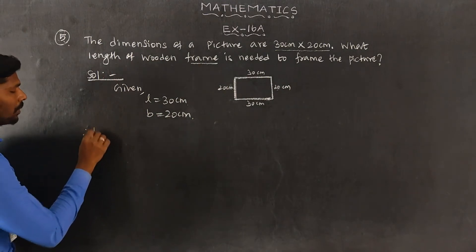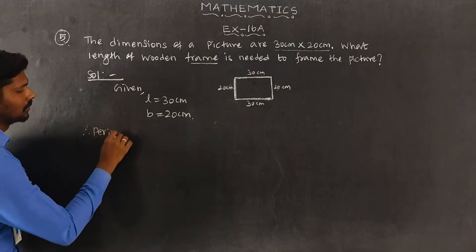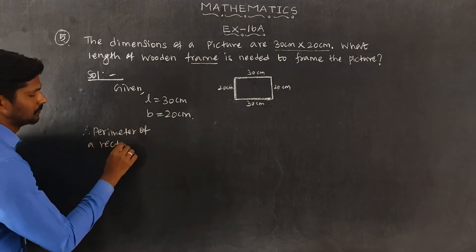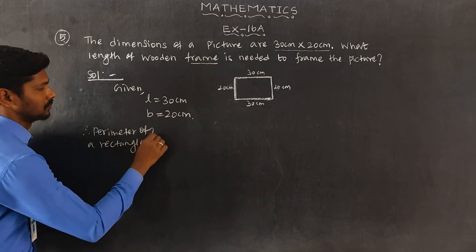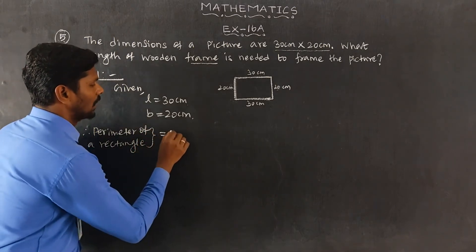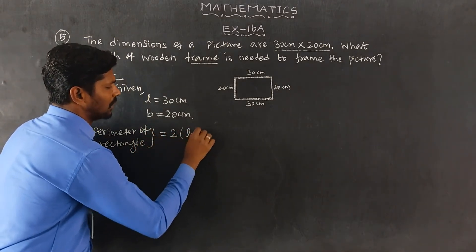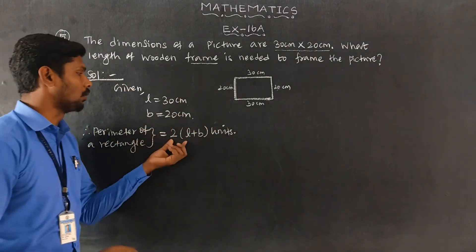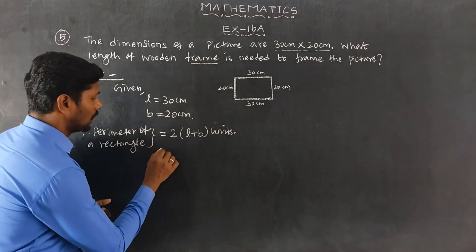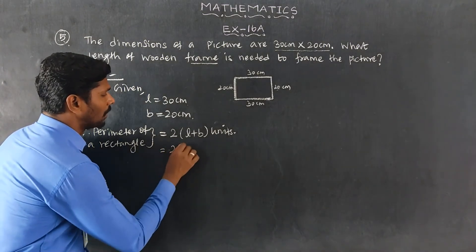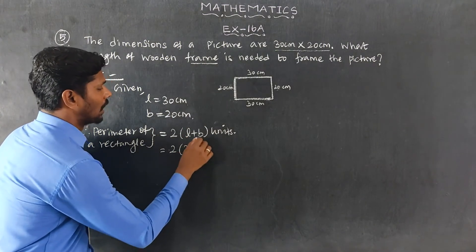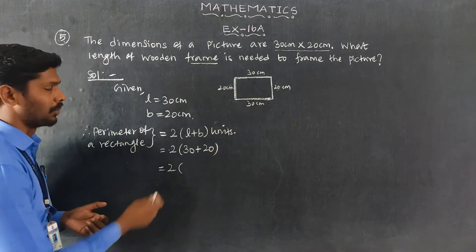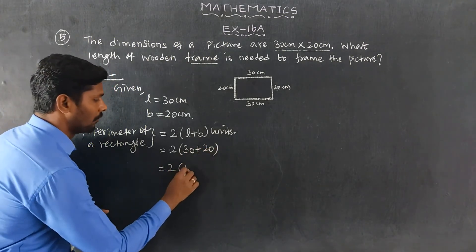The perimeter of a rectangle is equal to 2 into L plus B units. This is equal to 2 multiplied by L (30) and B (20), equal to 2 multiplied by 30 plus 20, which is 50.